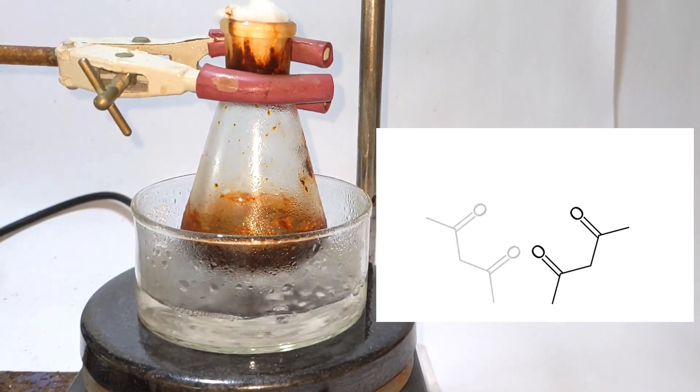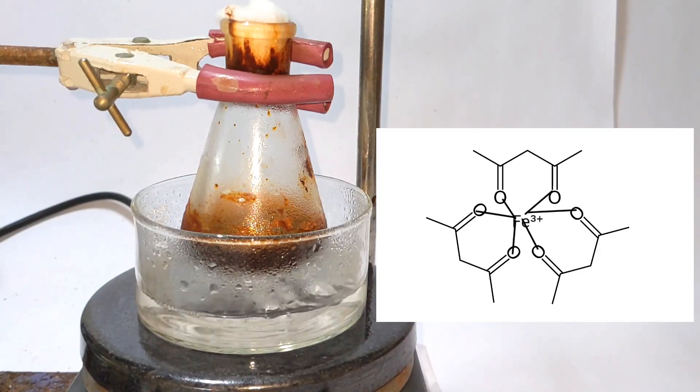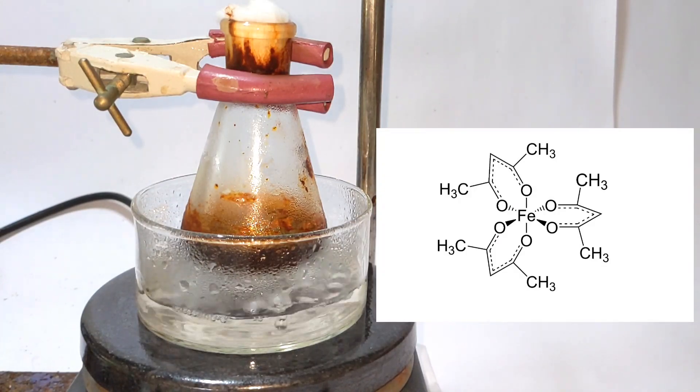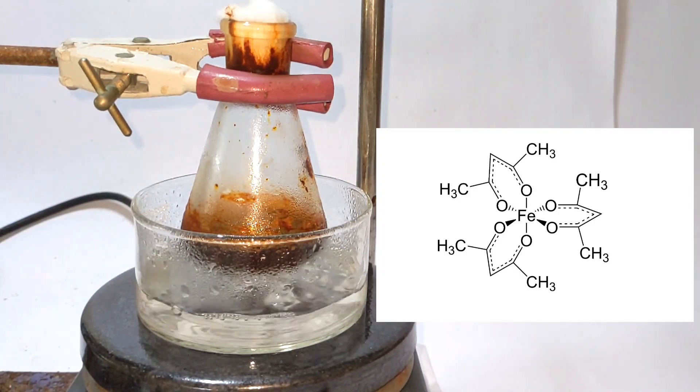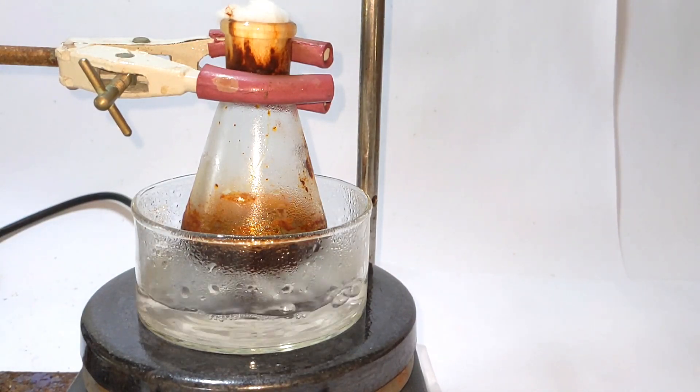Here we have three molecules of acetylacetone and in the center we have the iron(III) plus. We have the six valencies occupied by the three bidentate acetylacetone ligands forming the complex tris(acetylacetonato)iron(III).